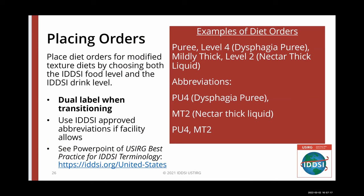Providers can place orders for modified texture diets by choosing both the IDDSI food level and the IDDSI drink level. Add texture diet order exceptions if assessed by the clinician and per your facility-established procedures. Add a therapeutic diet if needed. Make sure to dual-label as you are transitioning to IDDSI by adding the old diet name to the end of the order, such as mildly thick level 2, nectar thick liquid. Look for the approved IDDSI abbreviations list under the resources tab at iddsi.org.